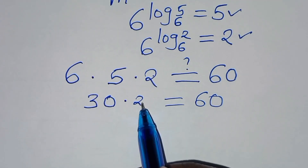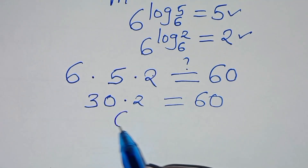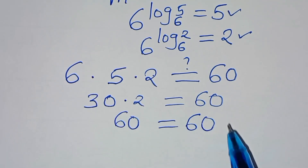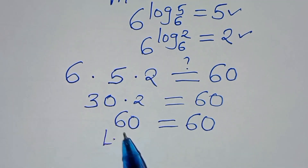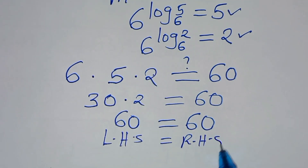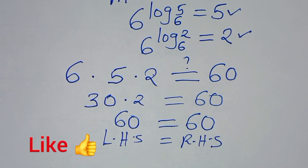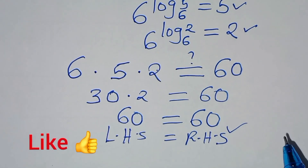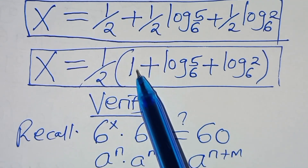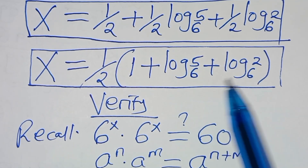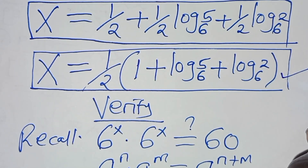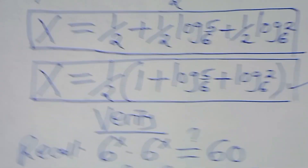So 6 times 5 times 2 is indeed equal to 60, confirming the left-hand side equals the right-hand side. This means that the value of x, which is one-half times the quantity 1 plus log₆5 plus log₆2, satisfies the equation. Kindly follow the steps and like this video and subscribe.